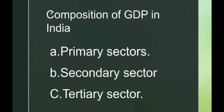Secondary Sector is an industrial sector where commodities are produced by transforming raw materials. Examples include iron and steel industry, cotton textile, jute, sugar, cement, paper, petrochemical, automobile and small scale industries. Tertiary Sector, also known as the service sector, includes services of government, scientific research, transport, communication, trade, postal and telegraph, banking, education, entertainment, healthcare, and information technology.